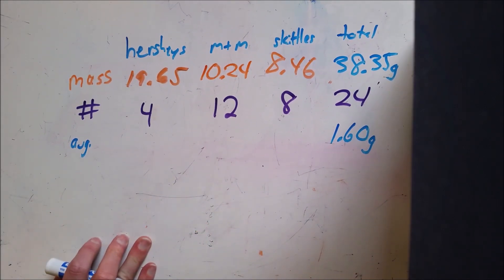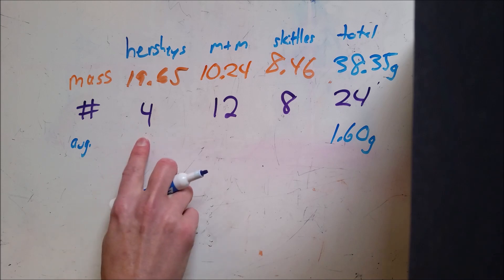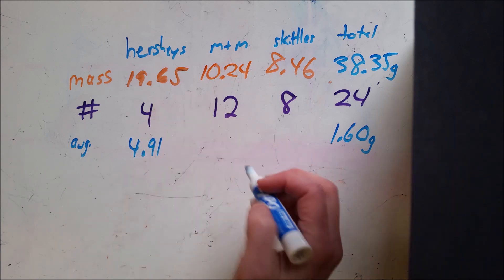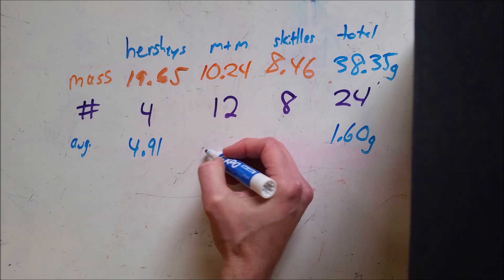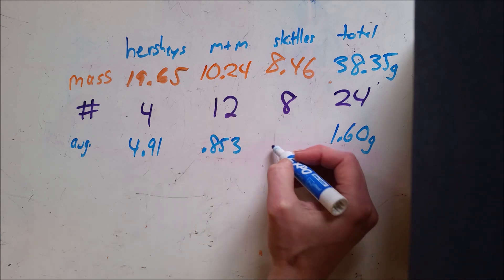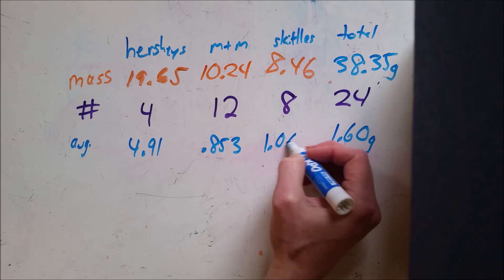So the first thing I do is I'm going to find the averages for all of these. So the Hershey's, 19.65 for four on average would be 4.91 grams for each one Hershey. The M&Ms here are 0.853 grams per one M&M, and the Skittles are just over one, 1.06 grams.